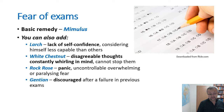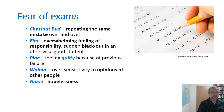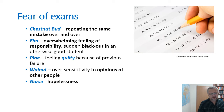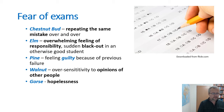Gentian is for feeling discouraged after a failure. Chestnut Bud is for repeating the same mistake over and over. Elm is for an overwhelming feeling of responsibility — for example, it's used in students who are usually successful but suddenly have a blackout and forget everything. Pine is for feeling guilty because of a previous failure. Walnut is for when the person is too sensitive to the opinions of others, paying more attention to what others think than to his own work and path.